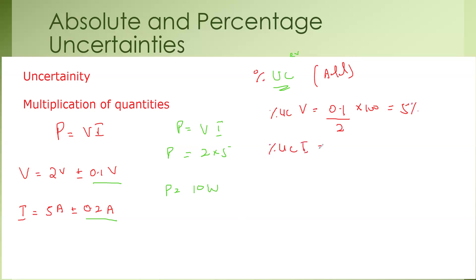For the current, 0.2 multiplied by 100 divided by 5, which equals 4 percent. So the percentage uncertainty in the current is 4%.